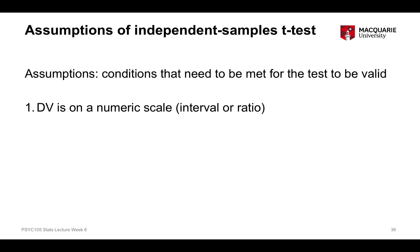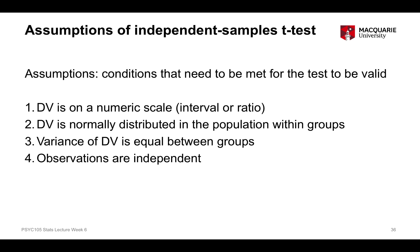To recap our assumptions: our dependent variable is on a numeric scale; by looking at the descriptives we could see it was approximately normally distributed within both groups; Levene's test confirmed the equality of variances assumption; and we know from our sampling design that observations are independent. All four assumptions are met, so we can now formally proceed to conduct our t-test.